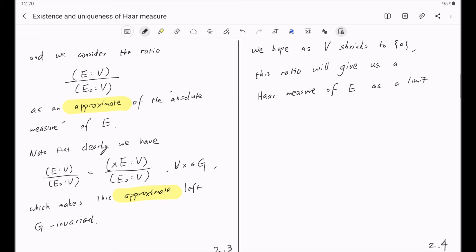So heuristically, we can write mu(E) as the limit as V approaches the identity of this ratio. So this is Haar's original idea of the proof.